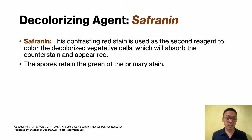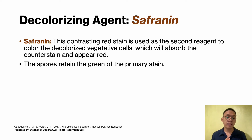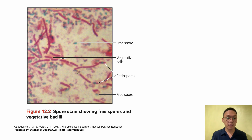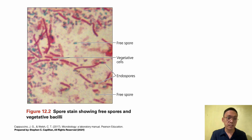Safranin is used as the counter stain — a contrasting red stain used as the second reagent to color the decolorized vegetative cells, which will absorb the counter stain and appear red. The spores retain the green of the primary stain. A spore stain shows free spores colored green, vegetative bacilli in red, and endospores also visible within vegetative cells.